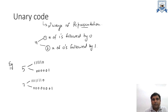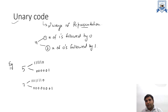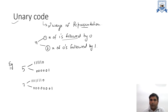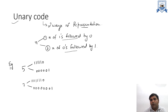The next topic is unary code. The unary code can be represented in two methods: the first method is n ones followed by a 0, and the second option is n zeros followed by a 1. You may choose any one of the representations.